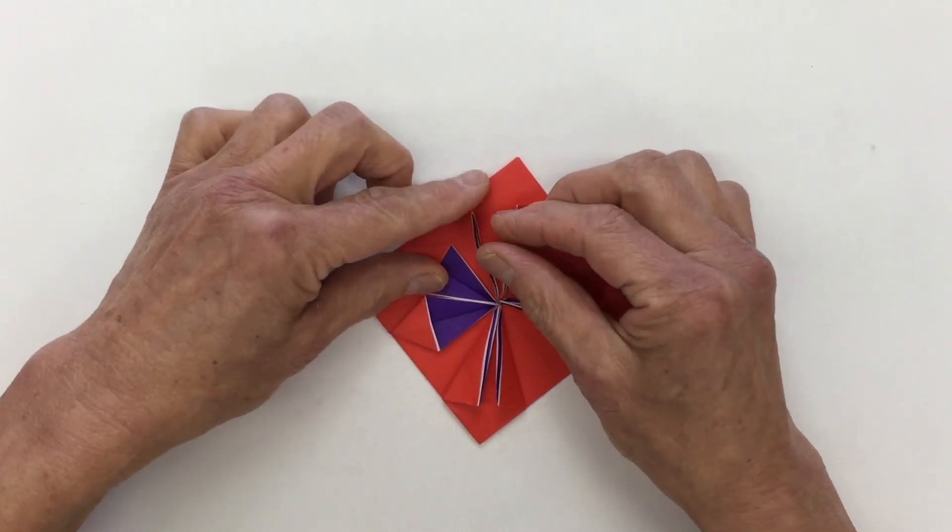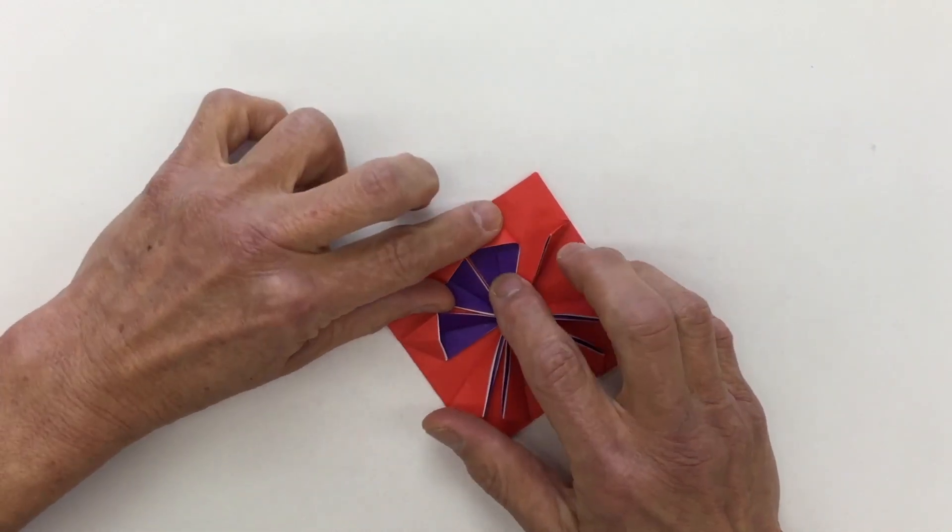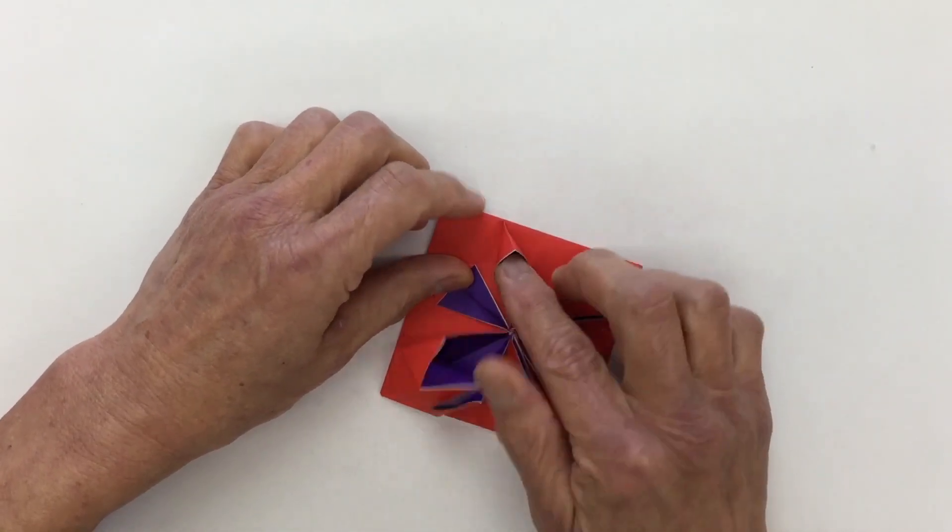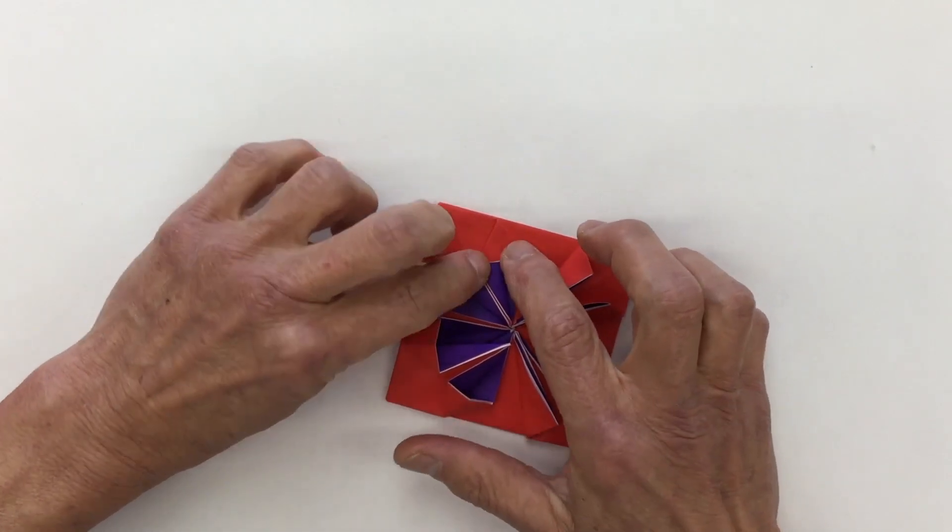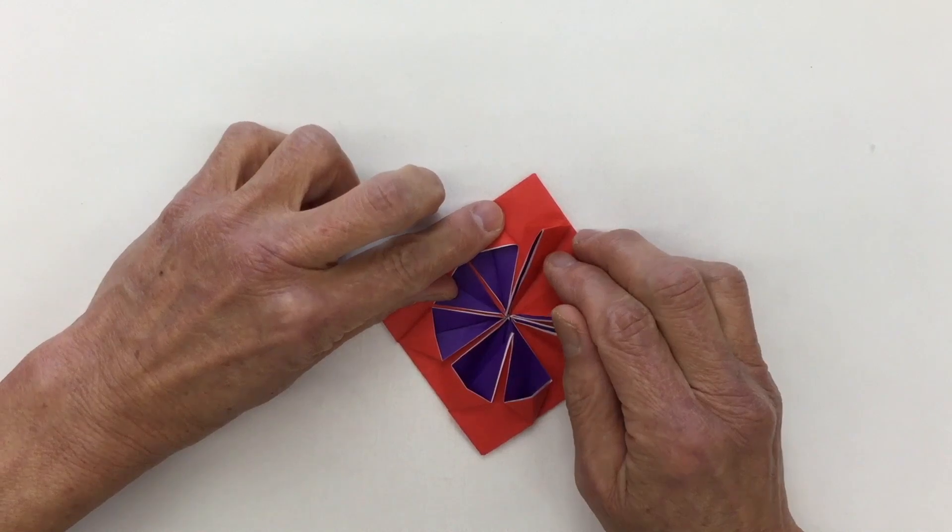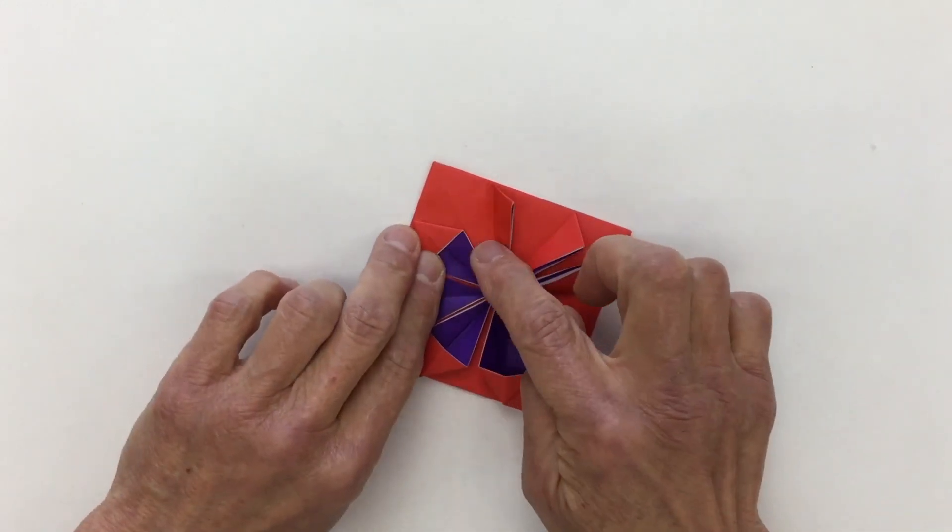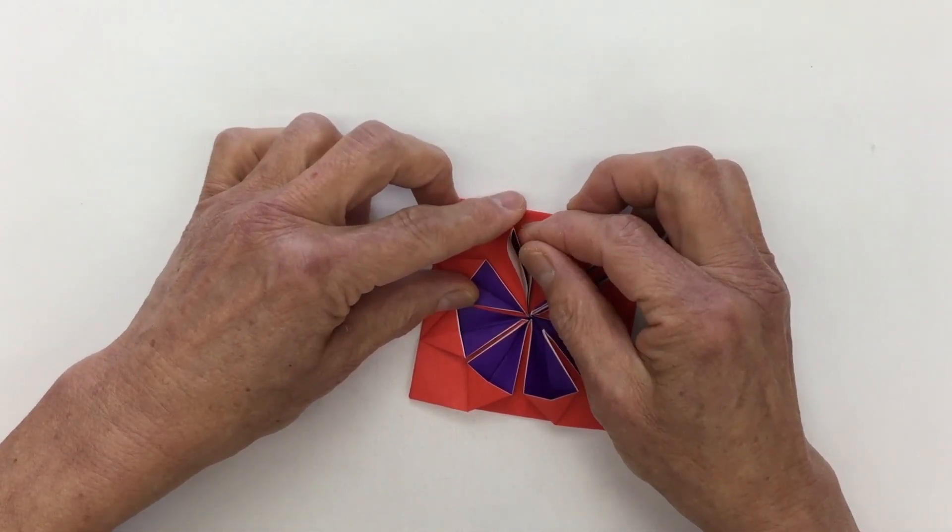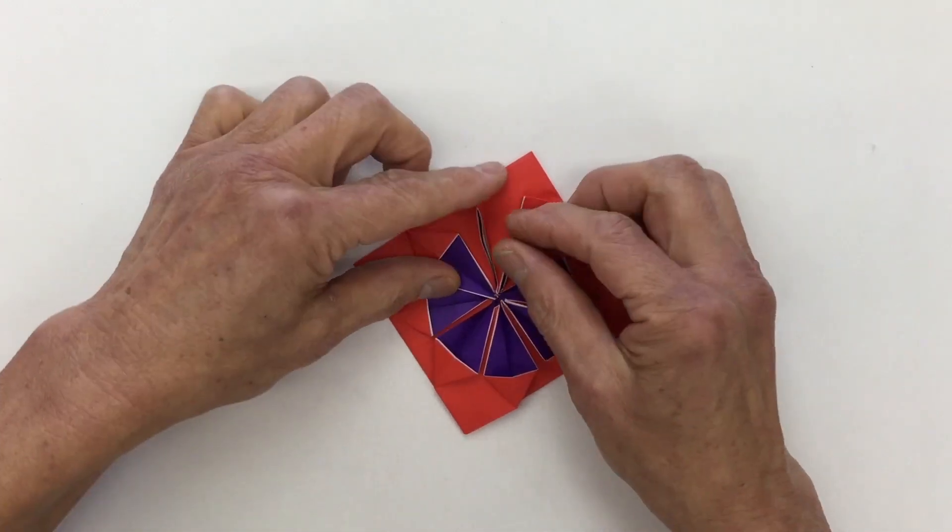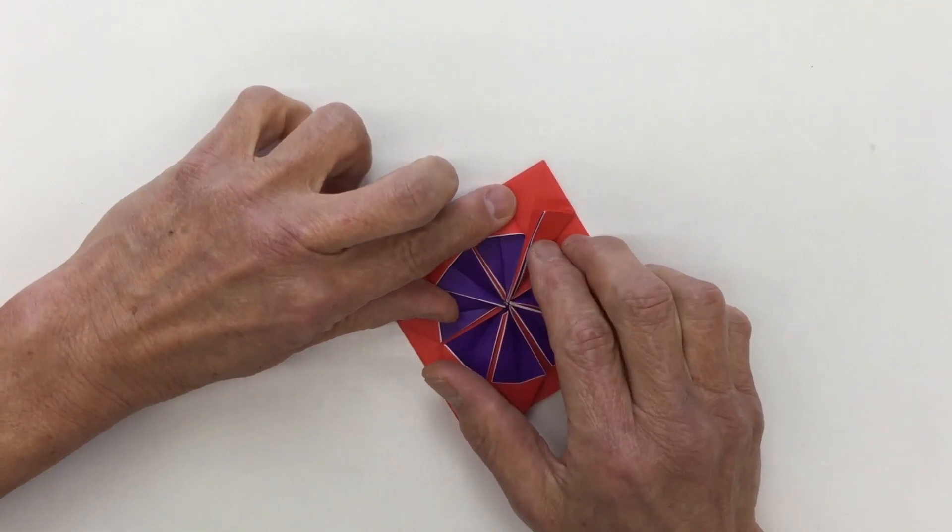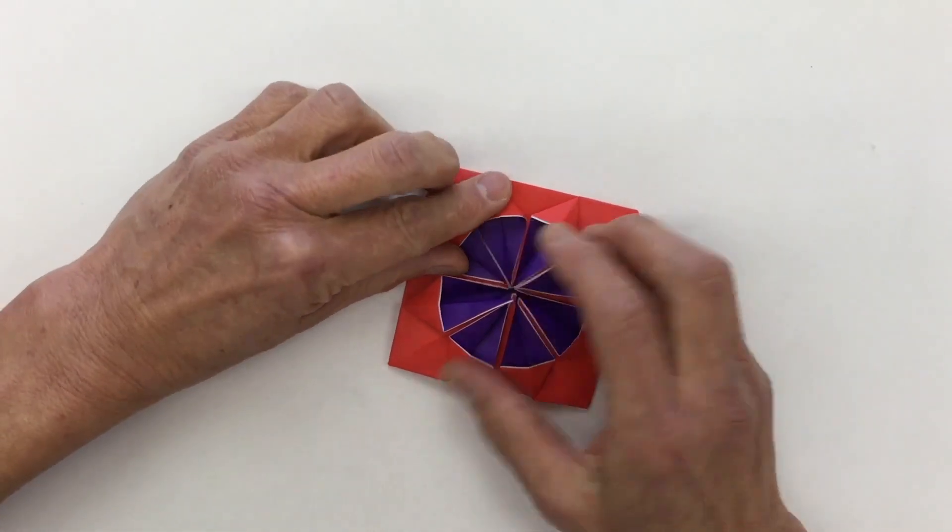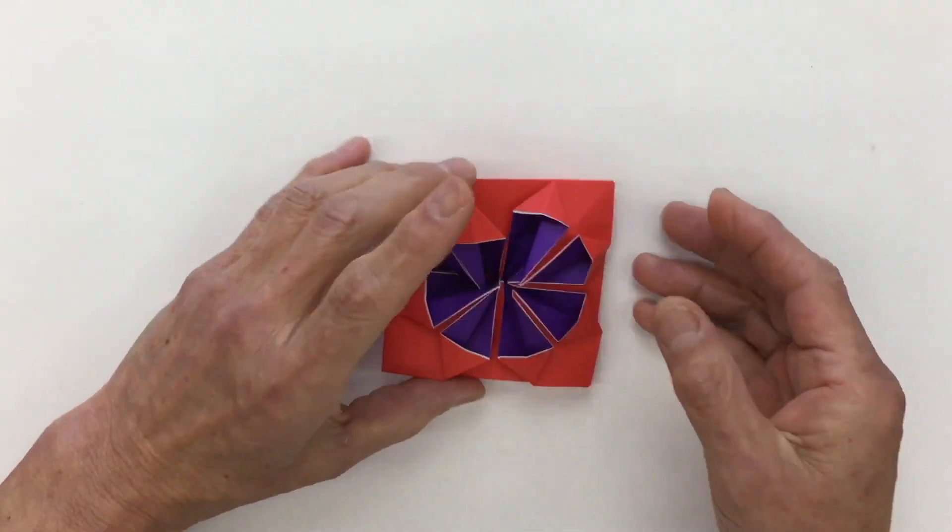Moving clockwise. Stand up. Open up. And squash down. When you squash it down, make sure that this line follows this line. Then you've got a really nice diamond. Stand up. Open up. And squash down. Stand up. Open up. Squash down. Stand up. Open up. Squash down. Stand up. Open up.